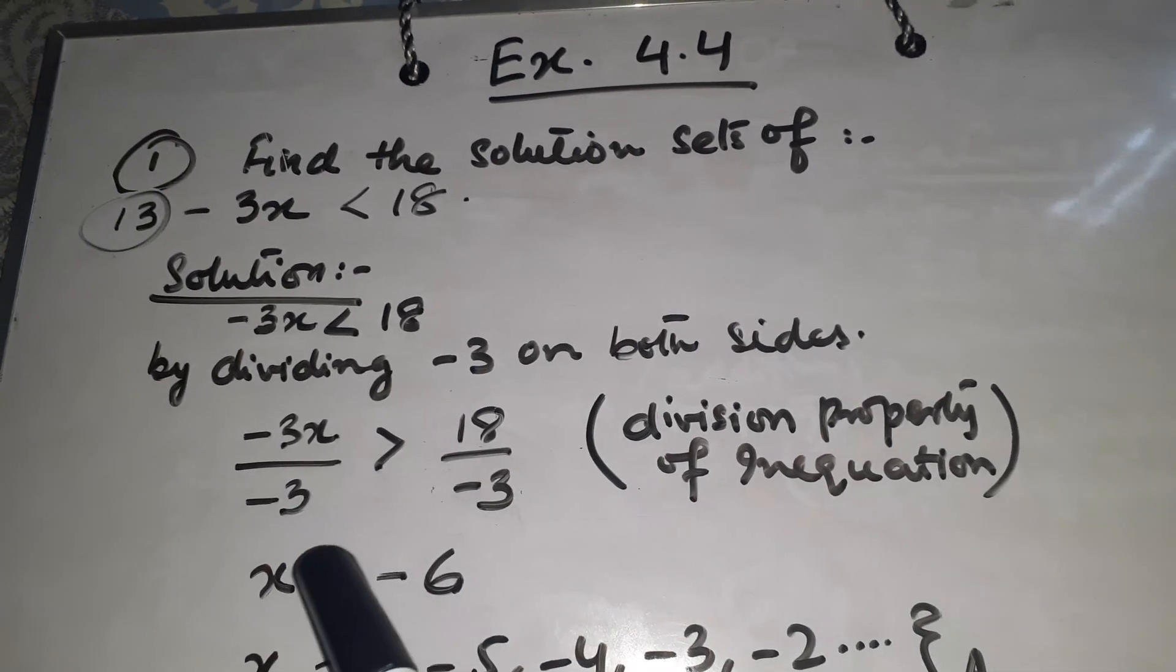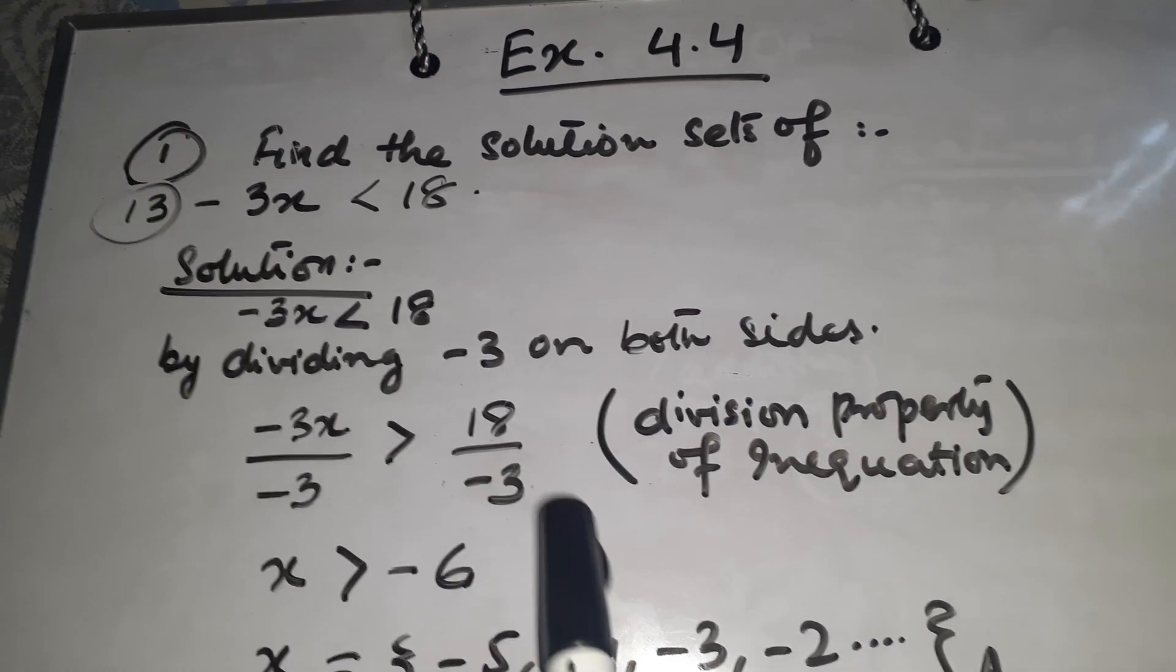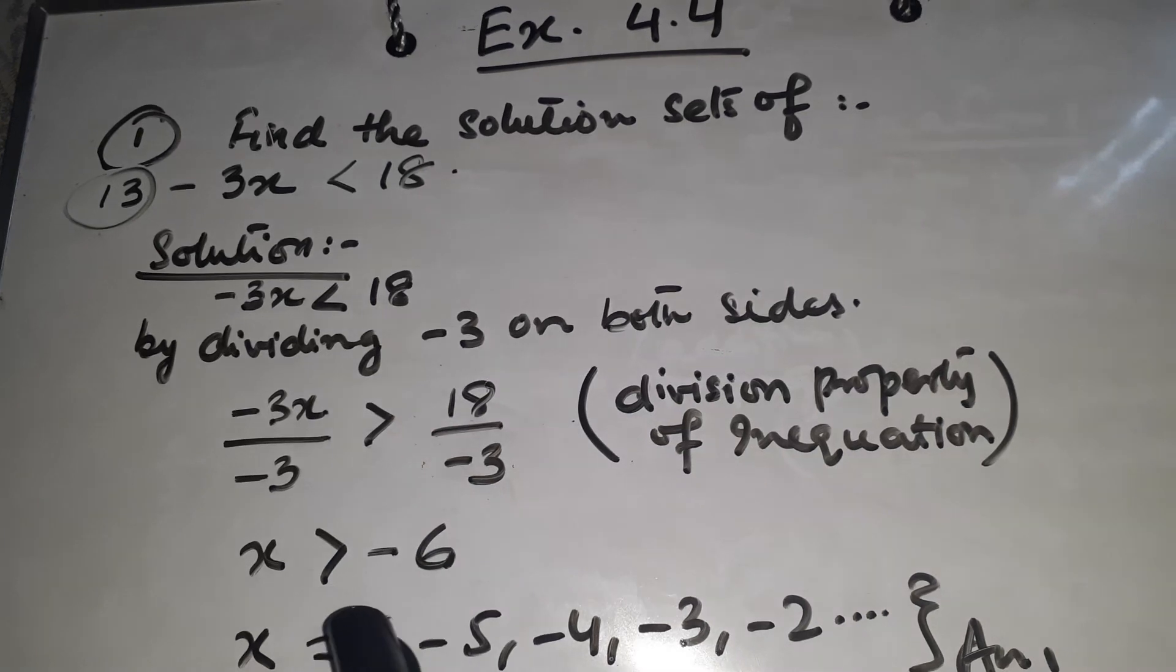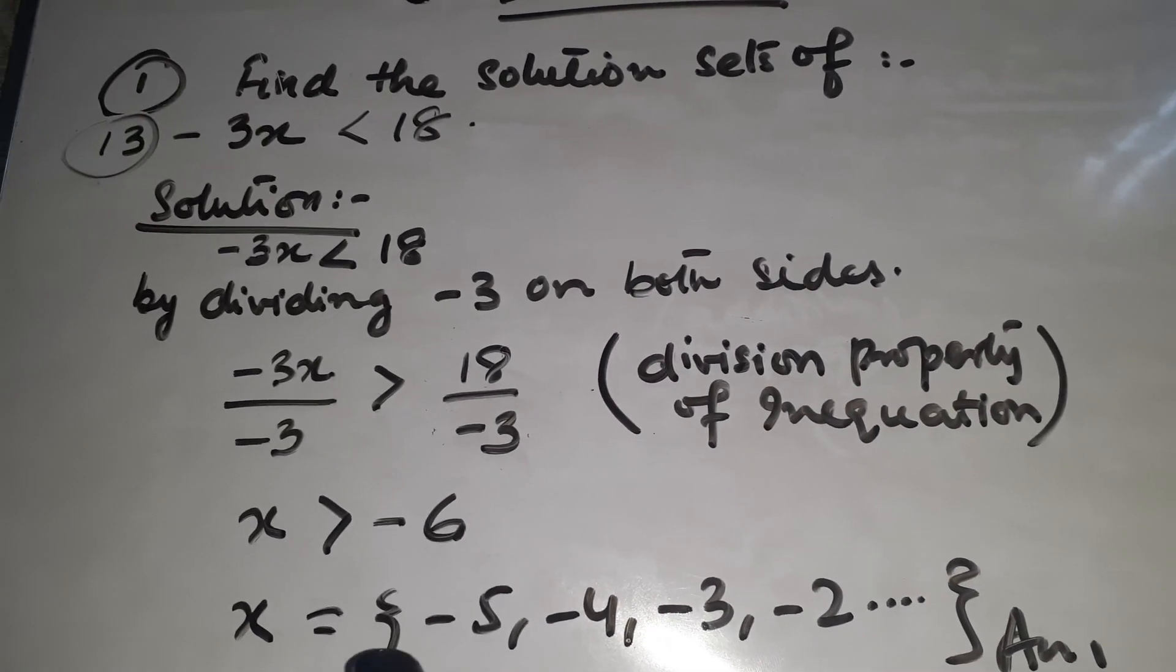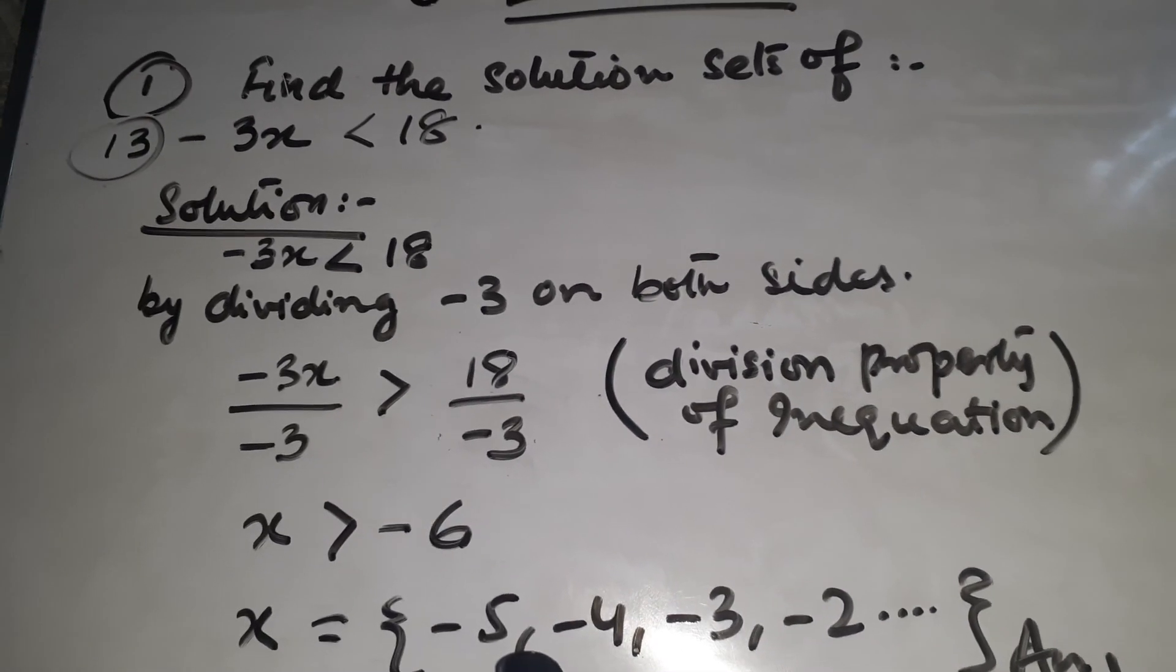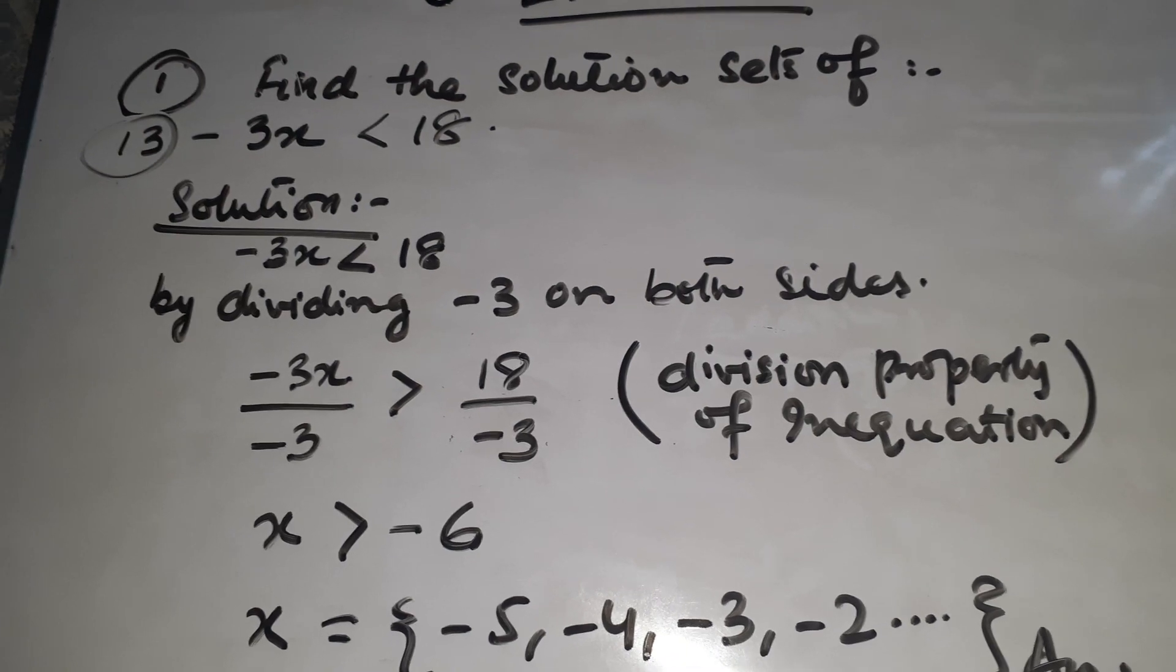So minus 3 here will cancel and here will be minus 6. So this will become x is greater than minus 6. X is greater than minus 6 means x is minus 5, minus 4, minus 3, minus 2 and so on.